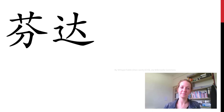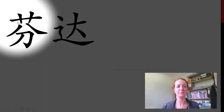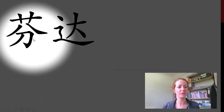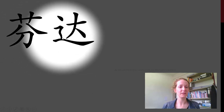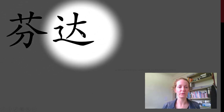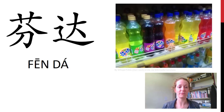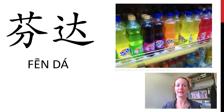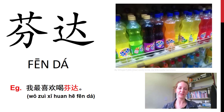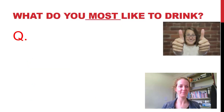你呢? 这是什么? Have a look at the radicals. We've got a plant radical at the top, and this one from our time unit — 分. And what about this one? Adjectives — 这是大. So that gives us the sound. 这是分打. What does that sound like? Fanta! Woohoo! 我最喜欢喝分打.